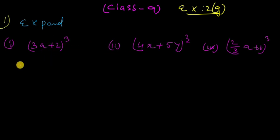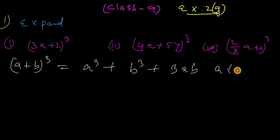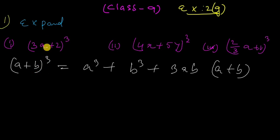It's called A plus B whole cube. It equals A cube plus B cube plus 3B times A plus B. So let's look at question number 1.